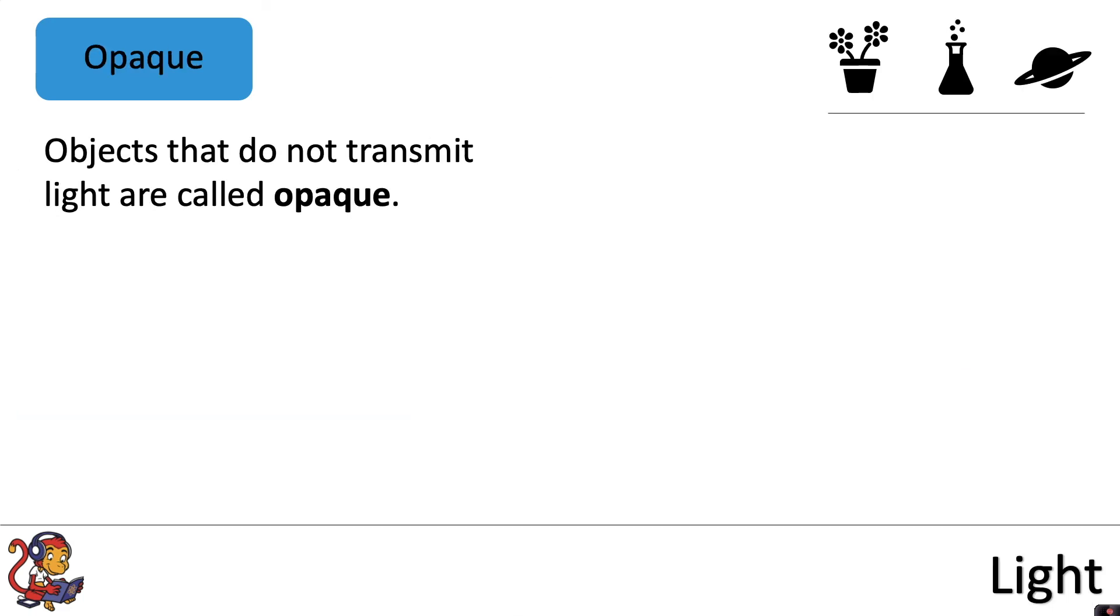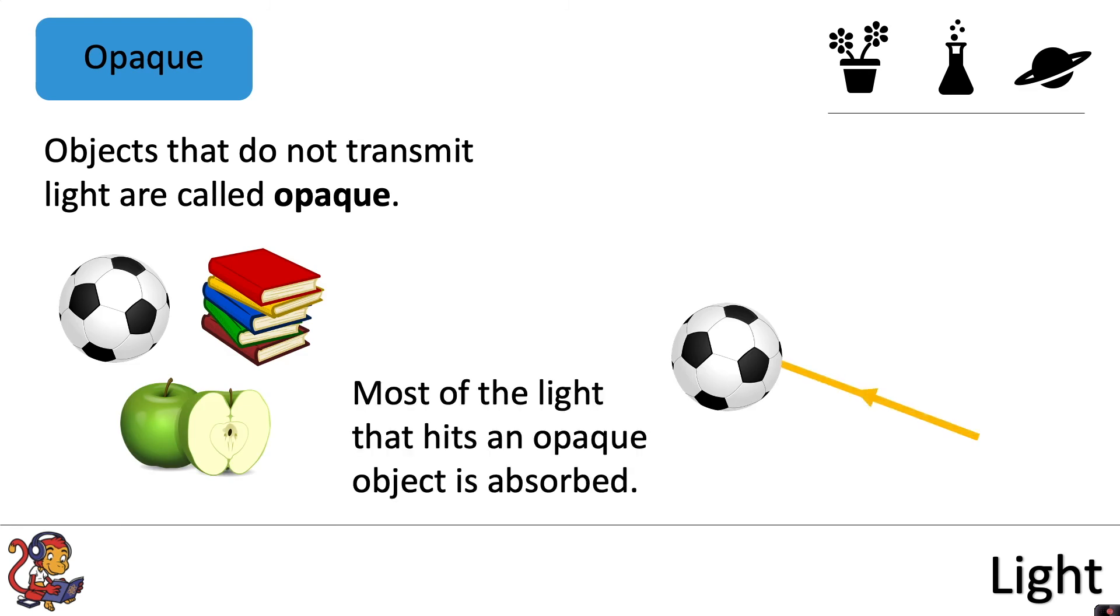Objects that do not transmit light are called opaque, which means light does not go through these objects. Most of the light that hits an opaque object is absorbed, and some light will also be reflected.